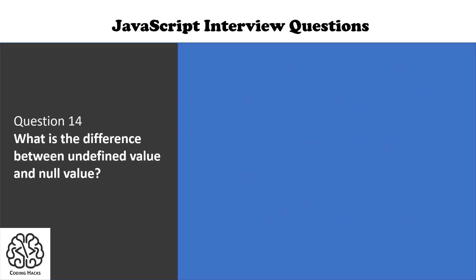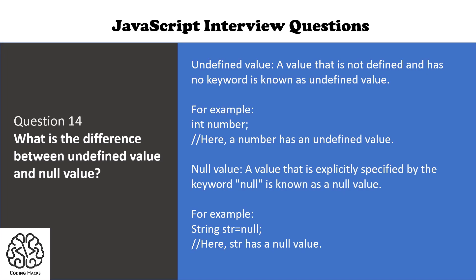Question number 14 is: what is the difference between undefined value and null value? An undefined value is a value that is not defined and has no keyword. A null value is explicitly specified by the keyword null. For example, an integer variable that has no assigned value has an undefined value, whereas a string variable assigned as null has a null value.